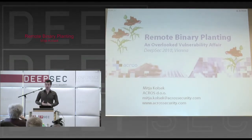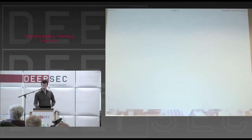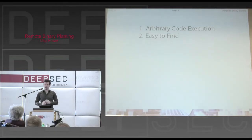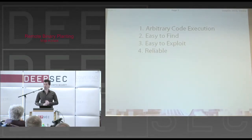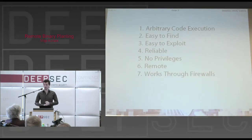This vulnerability is very interesting to us. It has all it takes to become a vulnerability superstar. Why? It allows for arbitrary code execution — whatever you want executed, you can get it done. It's very easy to find; at least most of its instances are easy to find. It's also very easy to exploit and extremely reliable. Forget about buffer overflows — that's hard work. Binary planting is really easy. It requires no privileges on part of the attacker and can be done remotely, even through firewalls.